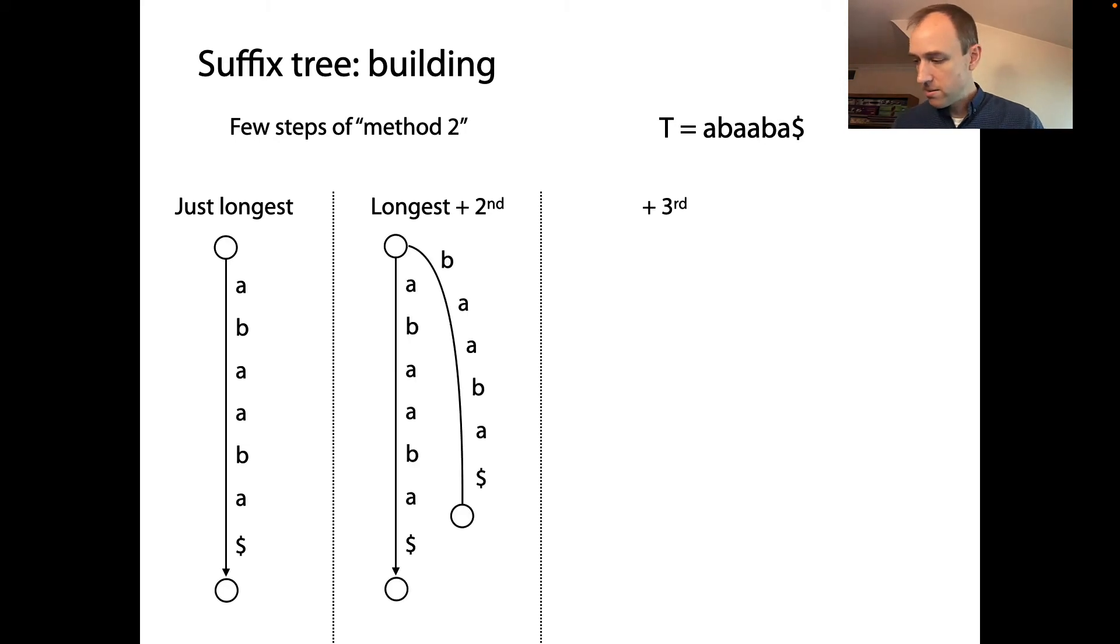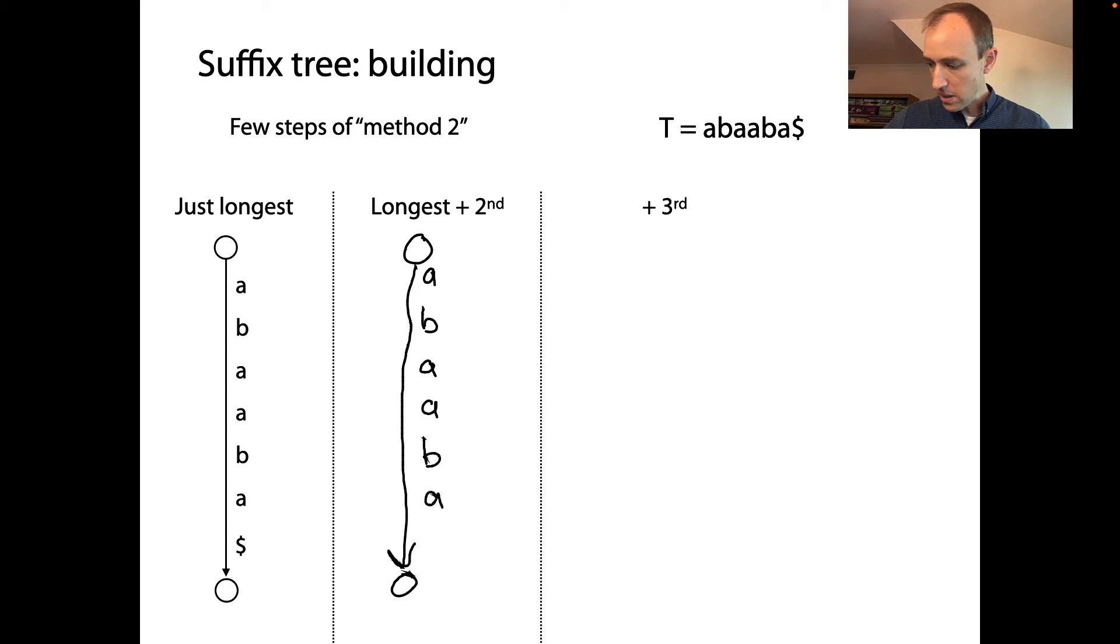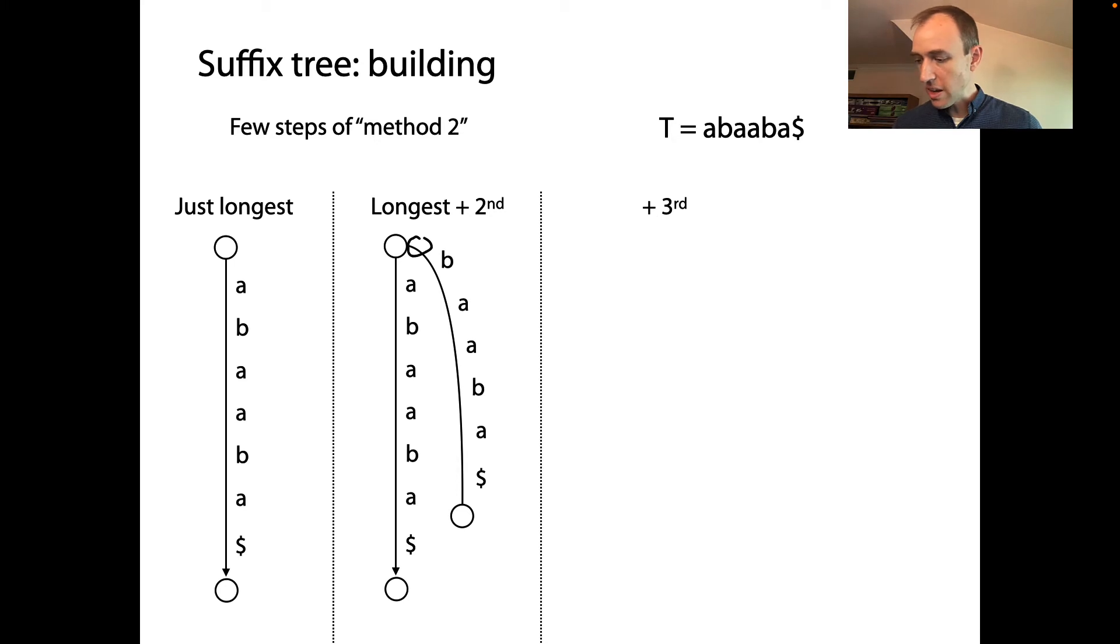So that's what the intermediate tree looks like when we've just added the longest suffix and we haven't gone any farther than that. So now starting from that, when I go to add the second longest suffix, that's going to be this suffix, BAABA$. I start at the root, and I want to add an edge for that suffix, and it has no shared prefix with the first one that I added, so it's going to come down off the root as well. So we're just going to draw basically another edge and its label is going to be BAABA$. So there's the tree when we have our first and second longest suffix in there.